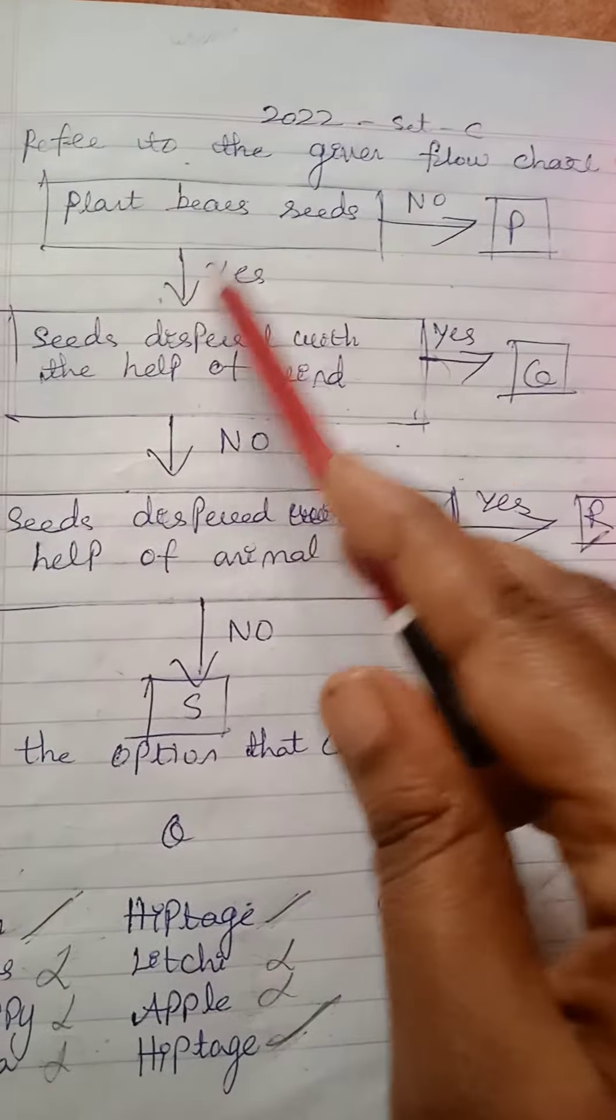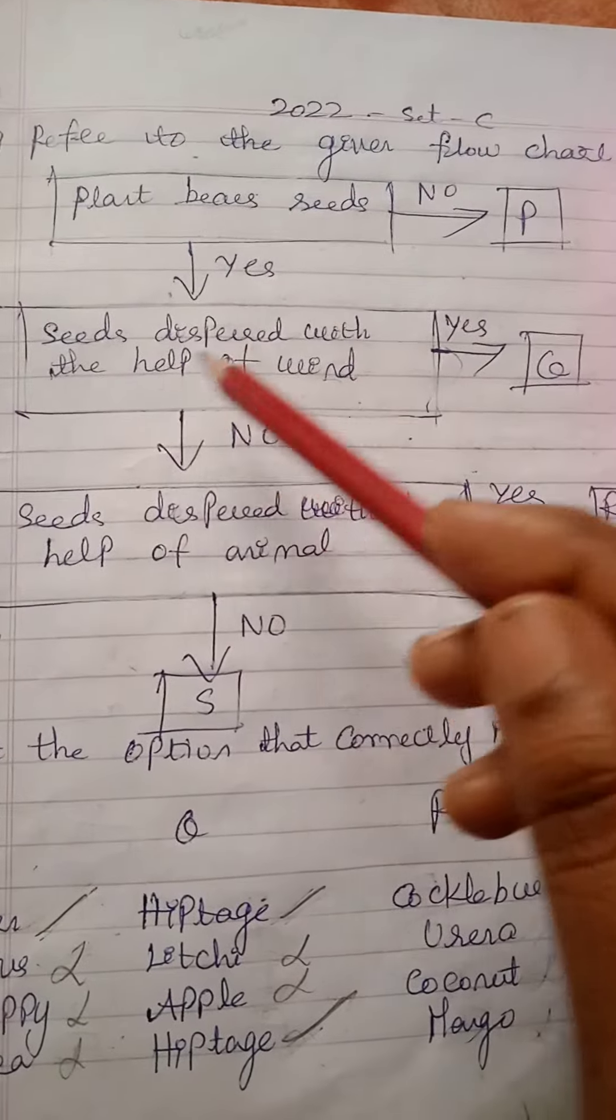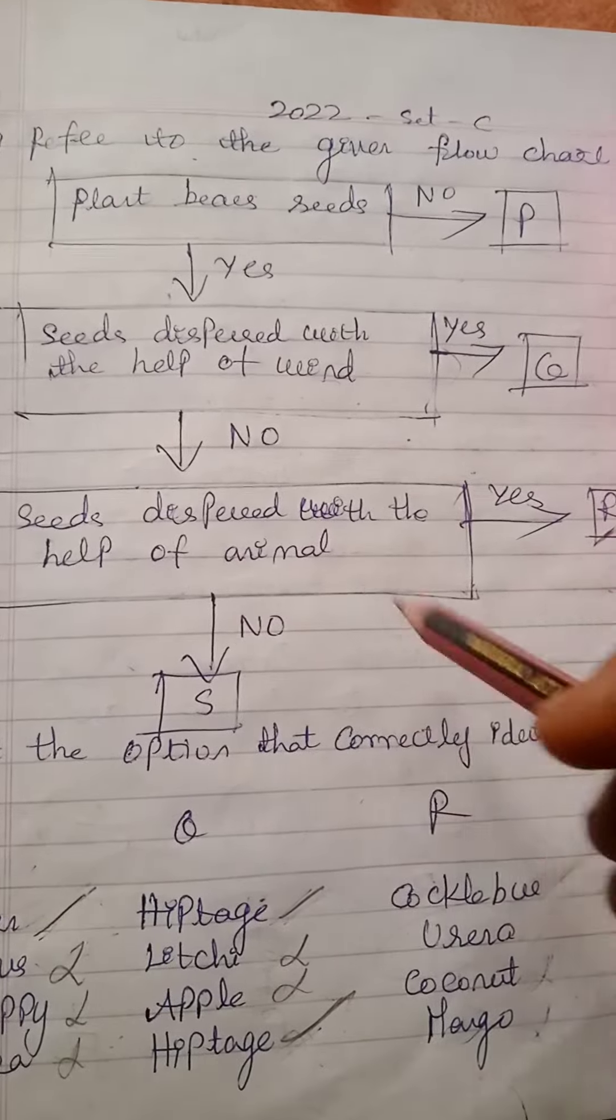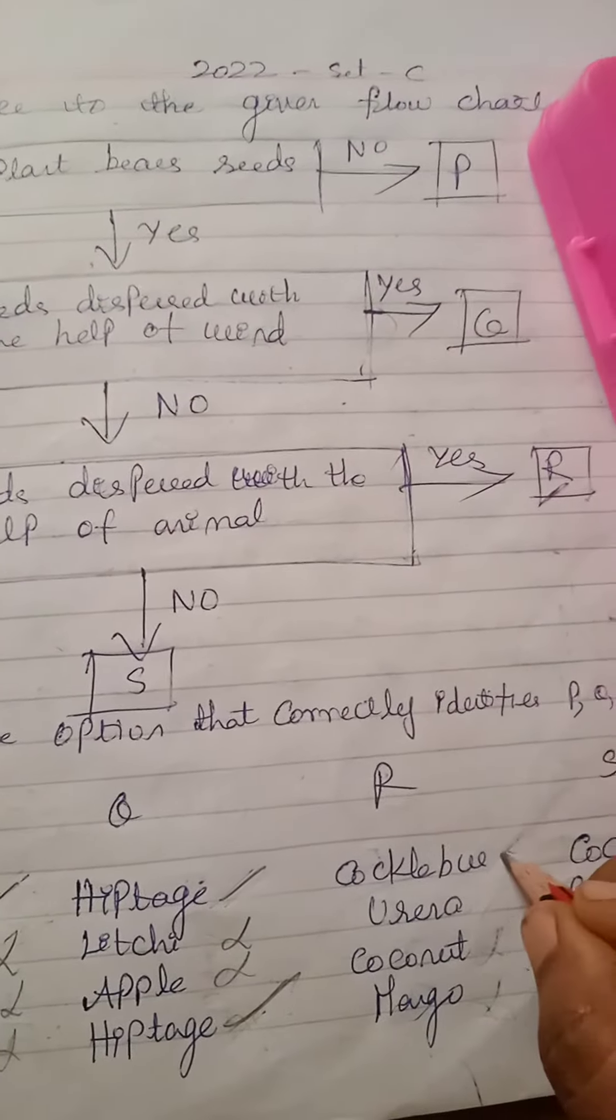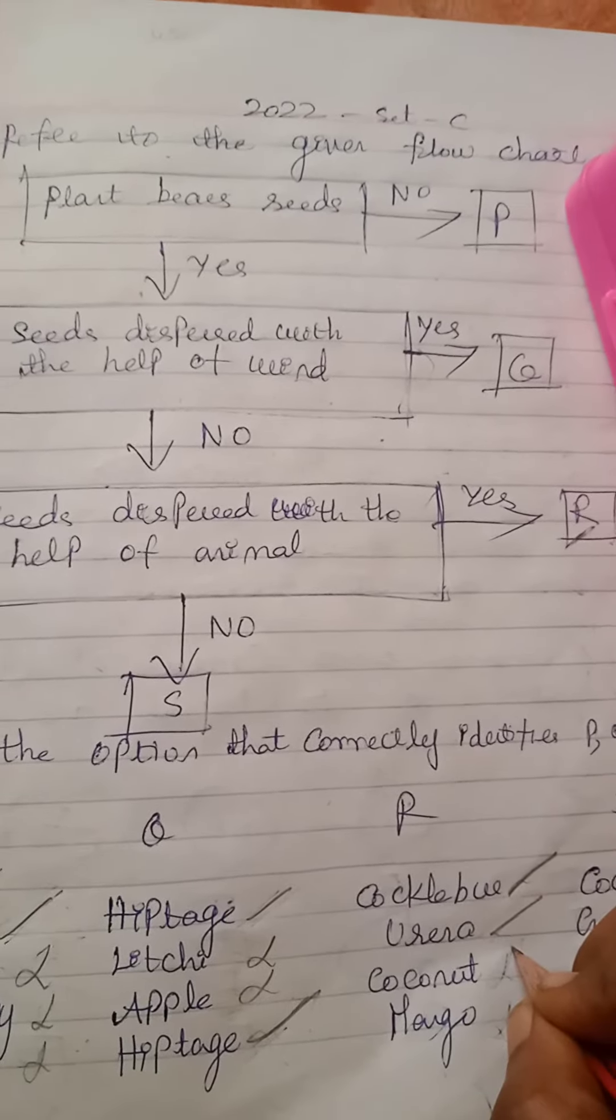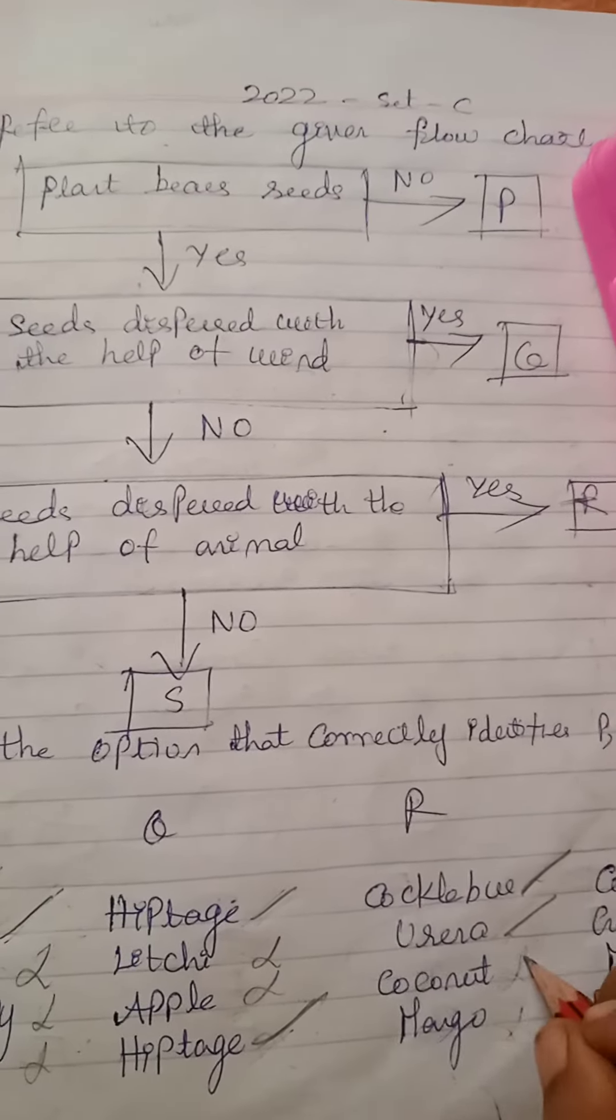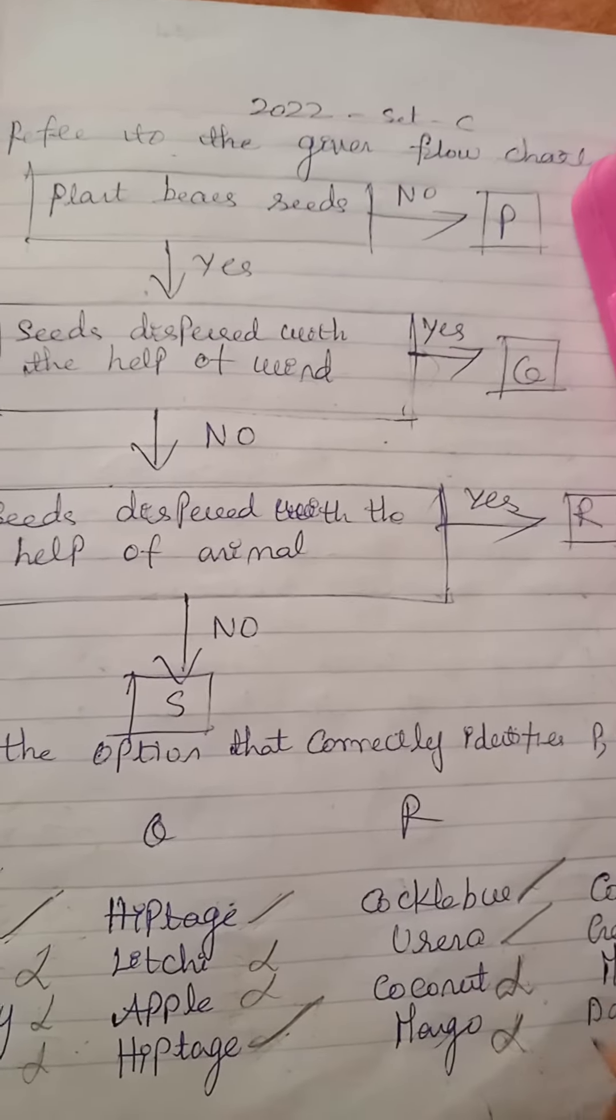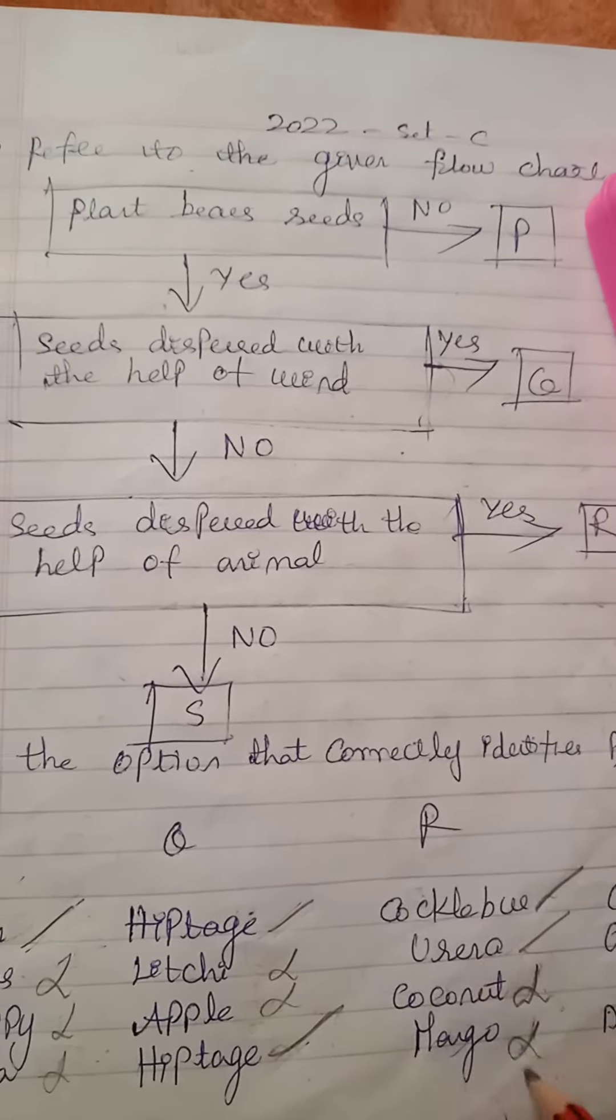Let's check R. Plant bears seeds - yes. Seeds dispersed with the help of wind - no. Seeds dispersed with the help of animal - yes. Here Cocklebur and Urena disperse their seeds by animal. Coconut disperses by water and Mango gets dispersed by humans and animals so it will not come.